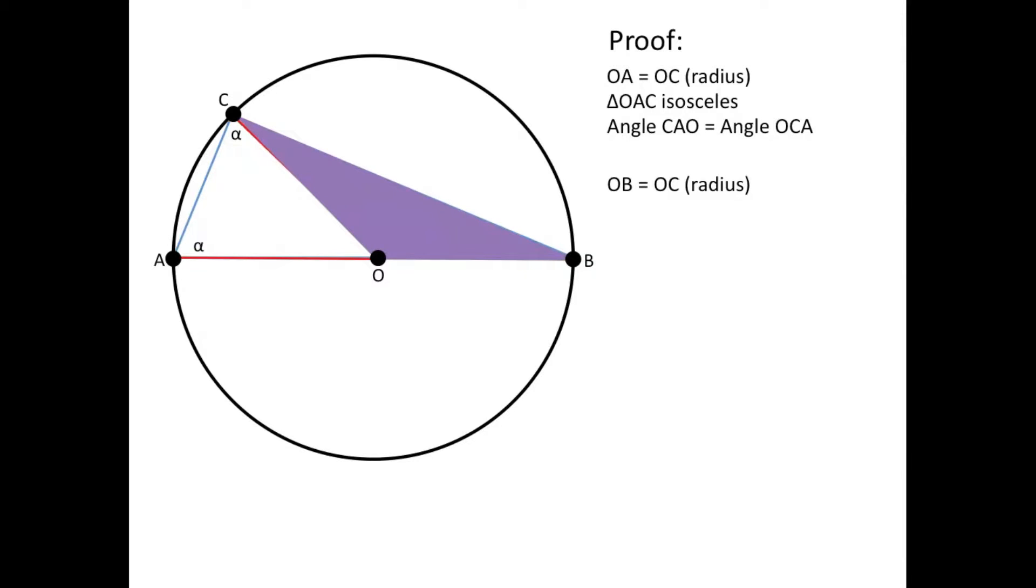Because OB and OC are the same length, making the base angles this time angle OBC and OCB equal angles of the isosceles triangle. So we'll call those beta, the two equal angles.